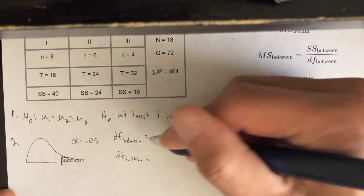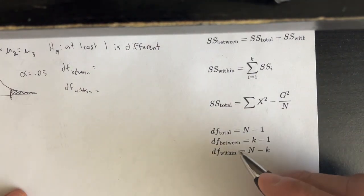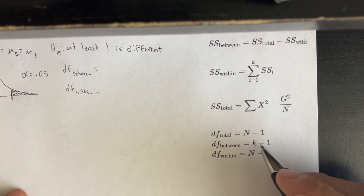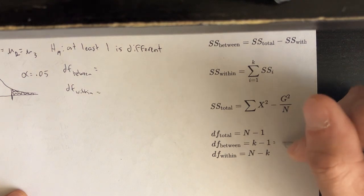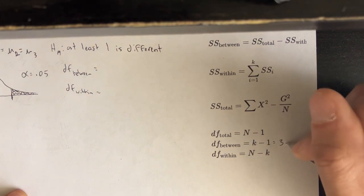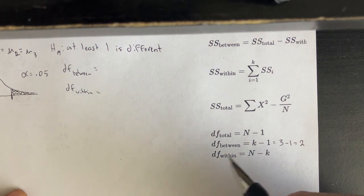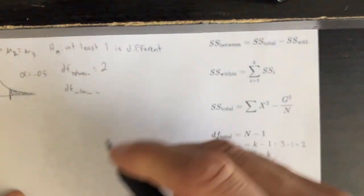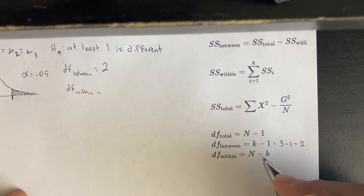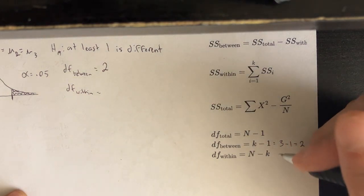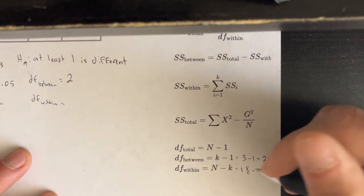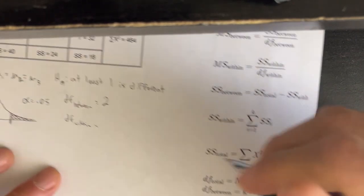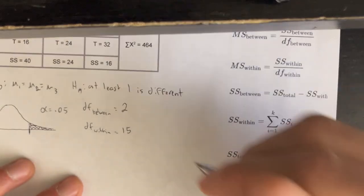Degrees of freedom between equals k minus 1, where k is the number of treatment groups. We have three treatment groups, so df between = 3 − 1 = 2. Degrees of freedom within equals big N minus k, so 18 minus 3 equals 15. So df between is 2 and df within is 15.